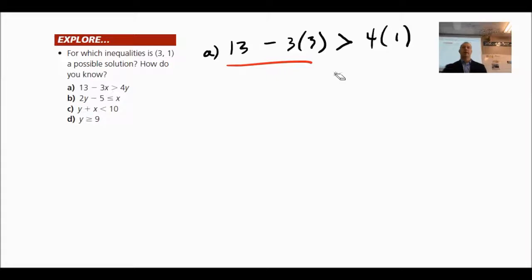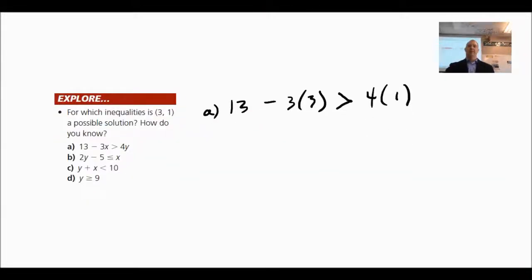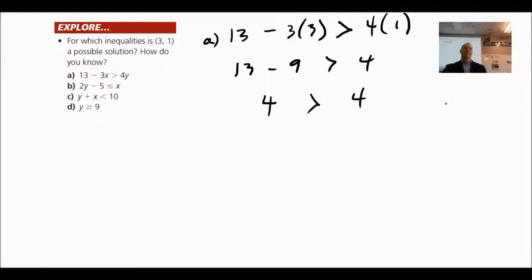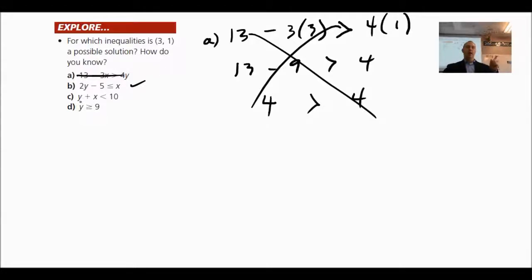What is 3 times 3? That's 9. So 13 minus 9 is 4. Is 4 greater than 4? No, it's equal — so inequality (a) does not work. For (b): 2 times 1 is 2, minus 5 is negative 3 — is that less than positive 3? Yes, so (b) works. For (c): 1 plus 3 is 4, less than 10? Yes. But is y=1 greater than or equal to 9? No. So (b) and (c) are solutions.